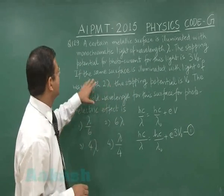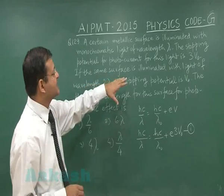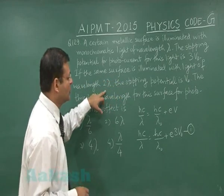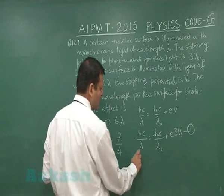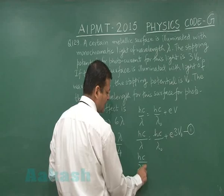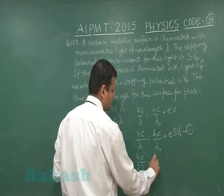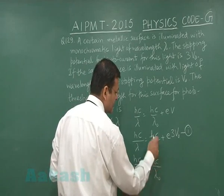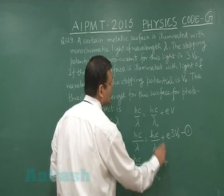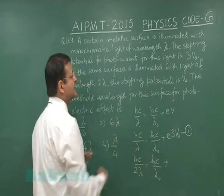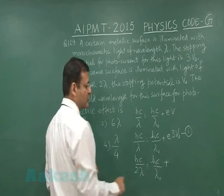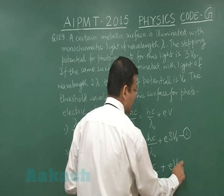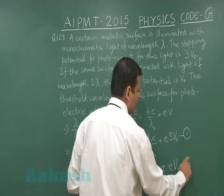Now the same surface is illuminated with light of wavelength 2λ. This time we use HC/(2λ), but the threshold wavelength λ₀ remains constant. The stopping potential becomes V₀, so the second equation is HC/(2λ) equals HC/λ₀ plus e·V₀.